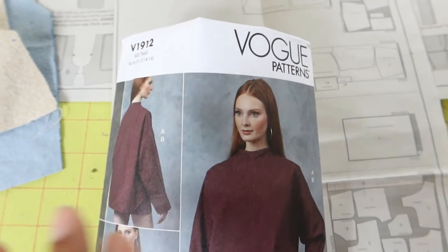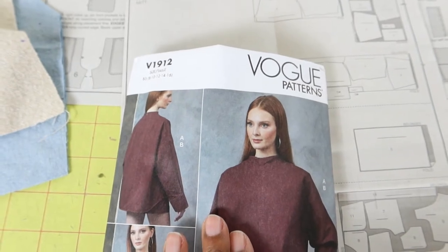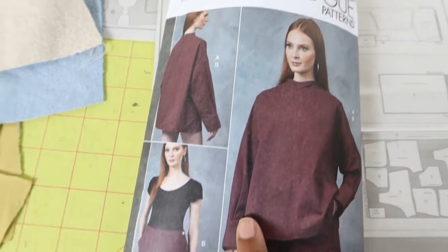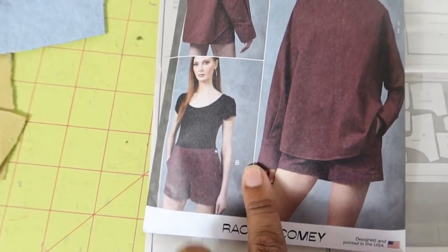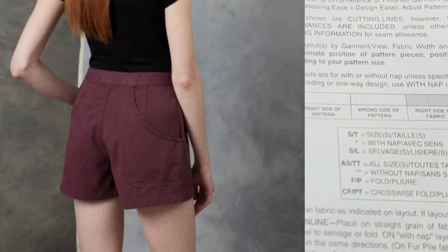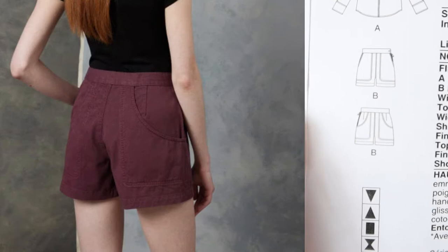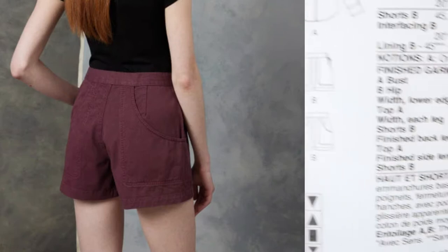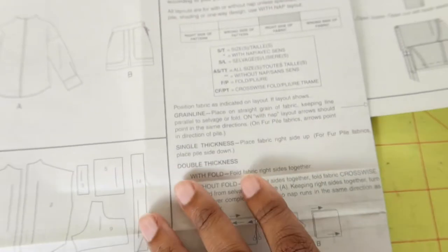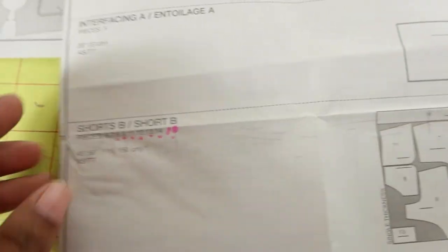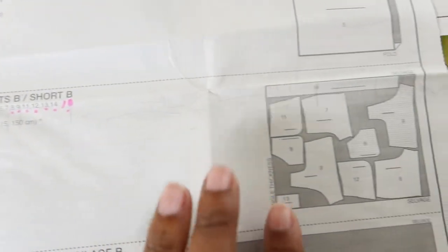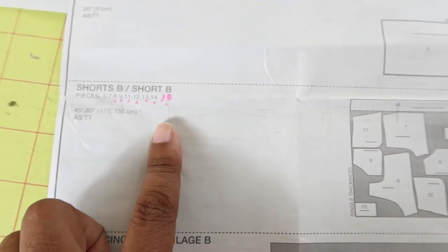So while I'm waiting for my skirt to come back, I'm just going to go ahead and work on my next sewing project. I am about to start working on this advanced Vogue pattern, which is Vogue 1912, and my plan is to make these shorts. I really love the way that the shorts look, especially in the back. The pockets show on the outside of the back and I think that is such a cute detail.